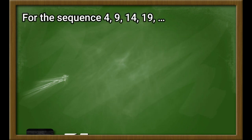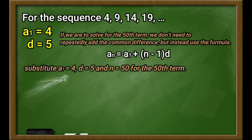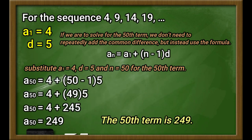For the previous sequence 4, 9, 14, 19 — A sub 1 equals 4 and d equals 5. If you are to solve for the 50th term, we don't need to repeatedly add the common difference, but instead use the formula A sub n equals A sub 1 plus n minus 1 times d. Substituting the values and solving, we get the 50th term as 249.